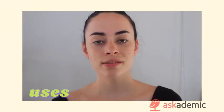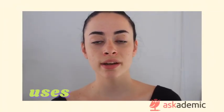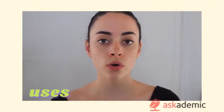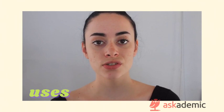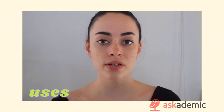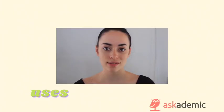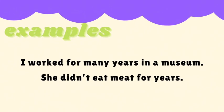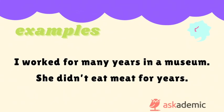We also use the past simple for narratives or actions from long periods in the past. Examples: I worked for many years in a museum; she didn't eat meat for years.